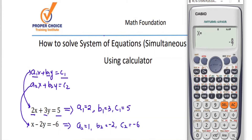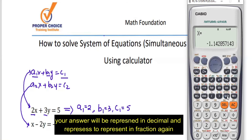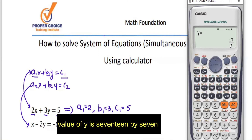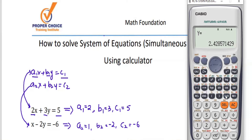You can also convert the fraction to a decimal. There is a button called S↔D above the DEL or AC key. If you press it, your answer will be represented as a decimal, and pressing it again converts back to a fraction. To get the value of Y, press Equal again. The value of Y is 17/7, which is approximately 2.42857 in decimal.